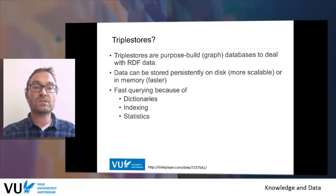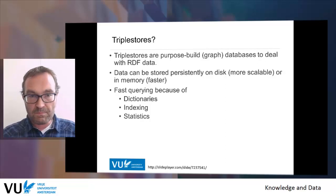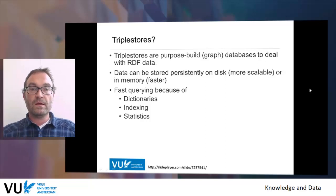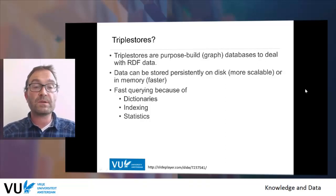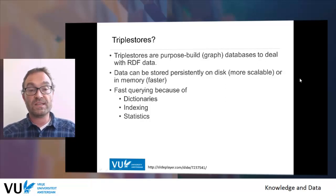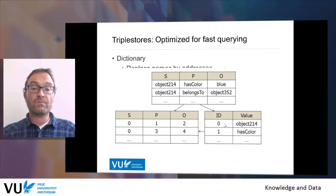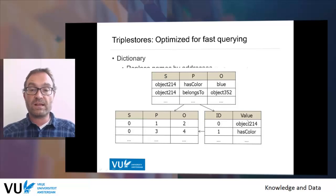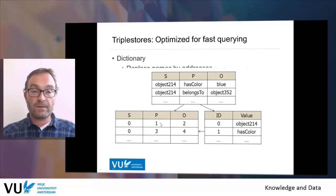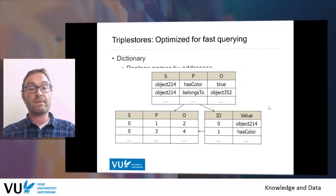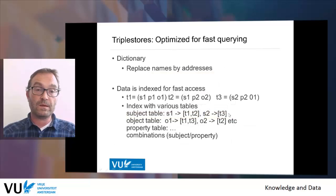A triple store is a purpose-built graph database to deal specifically with RDF data. It's made very efficient for dealing with prefixes and URIs. The data can be stored persistently on disk, which is scalable, or in memory, which is a bit faster. It is optimized for fast querying through the use of dictionary indices and statistics. A dictionary is where, if you have a database with long names, you write down abbreviations for those long names as identifiers, and then build a table that only contains these identifiers. So instead of saying a long URI several times, you have one dictionary entry with an identifier 0 for that URI, and then your SPO table becomes just numbers like 0, 1, 2 — making your tables far smaller. The dictionary means replacing names by addresses.